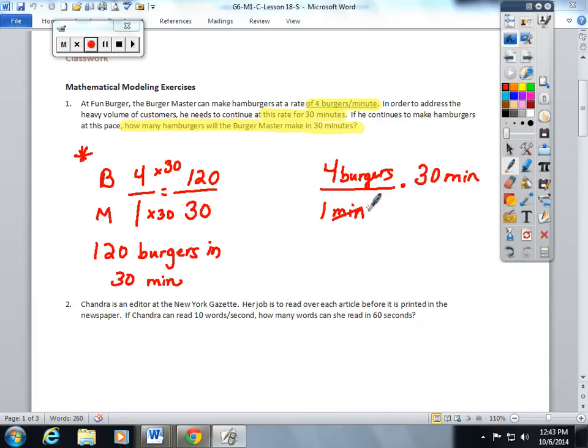Since minutes are across from minutes, they cancel, and you can just multiply the top two numbers. Every number has a whole number of one underneath it. Four times 30 is 120 over one. One times one is one. 120 divided by one is 120, and you're left with the label burgers.